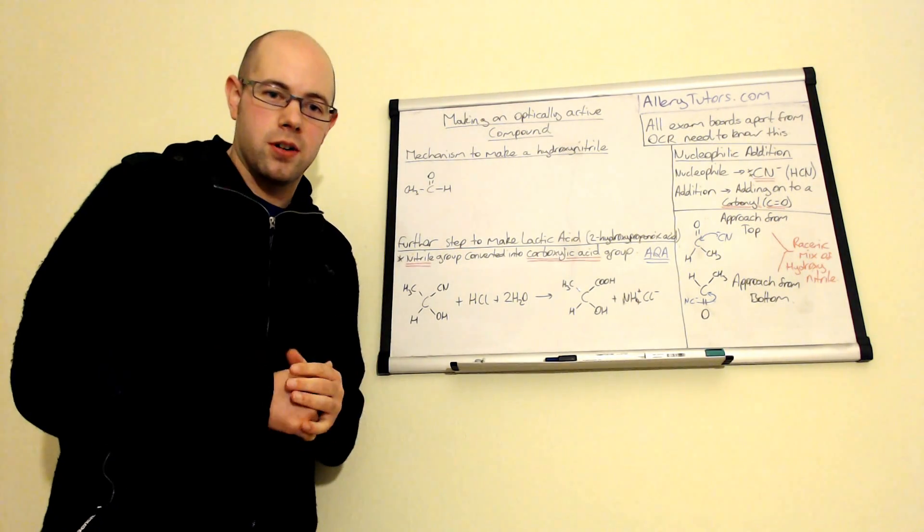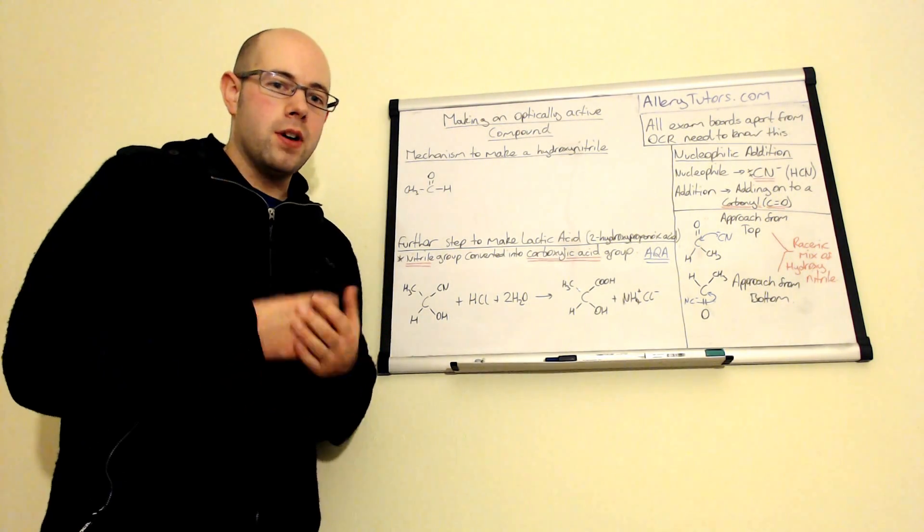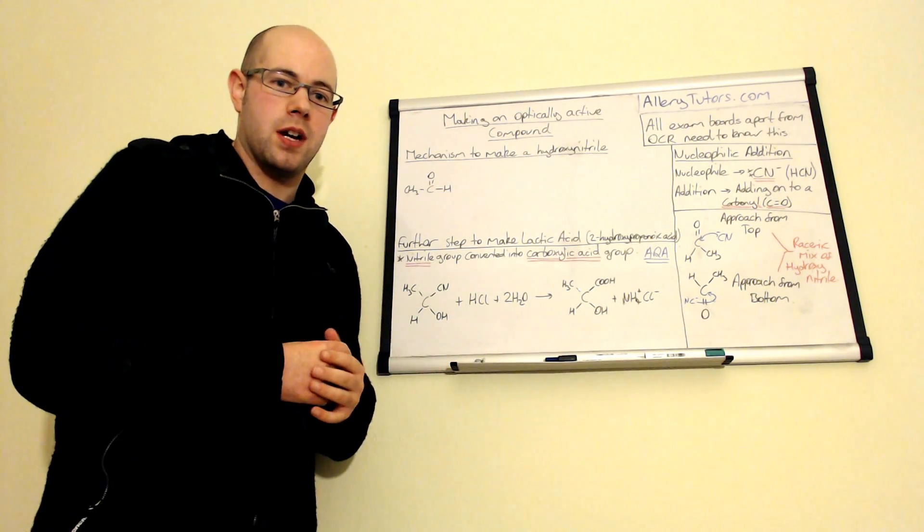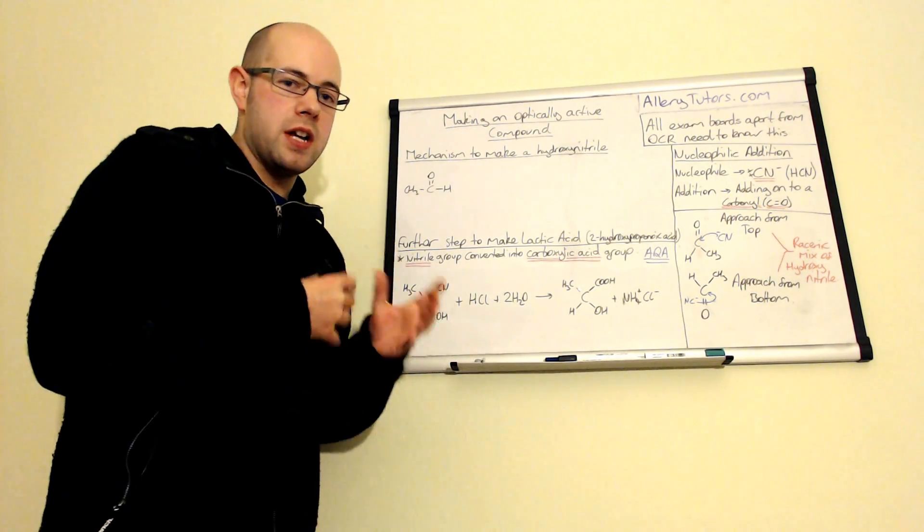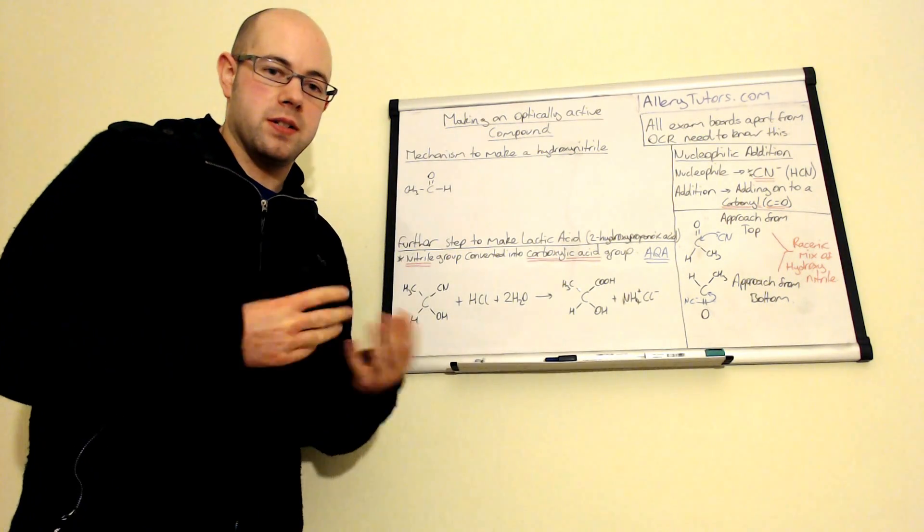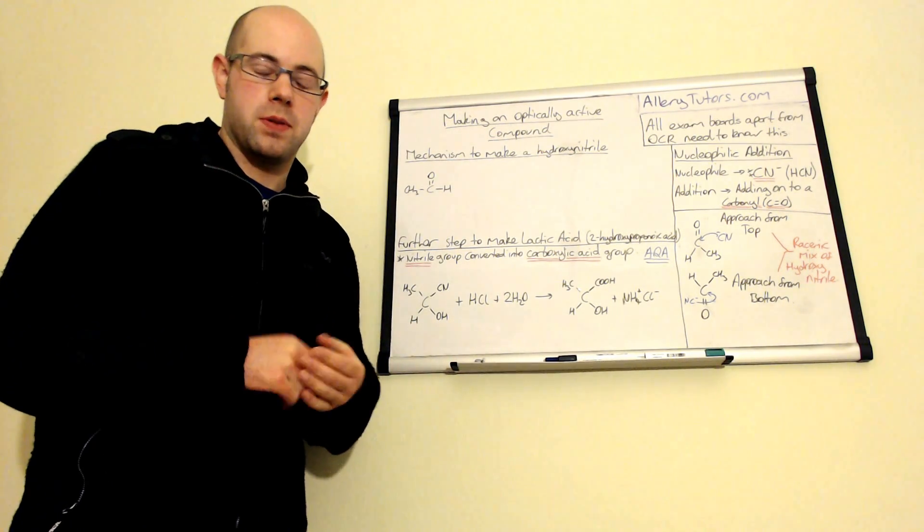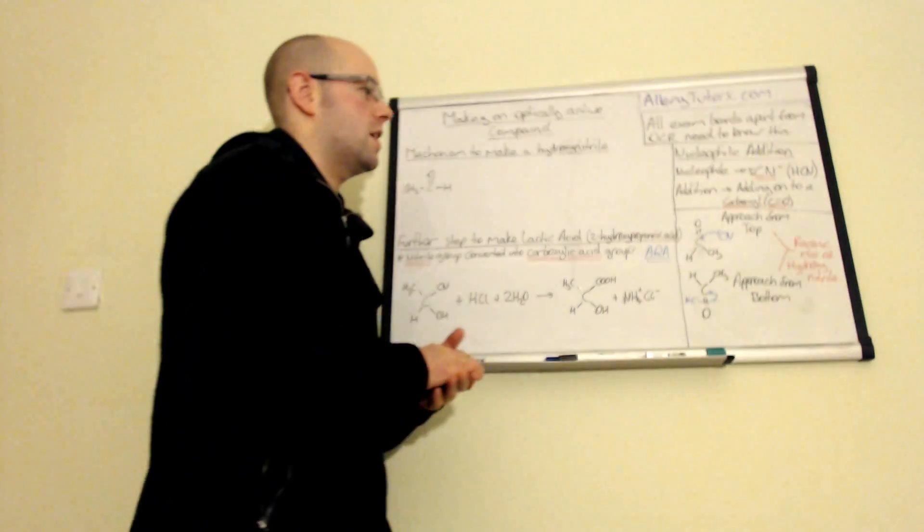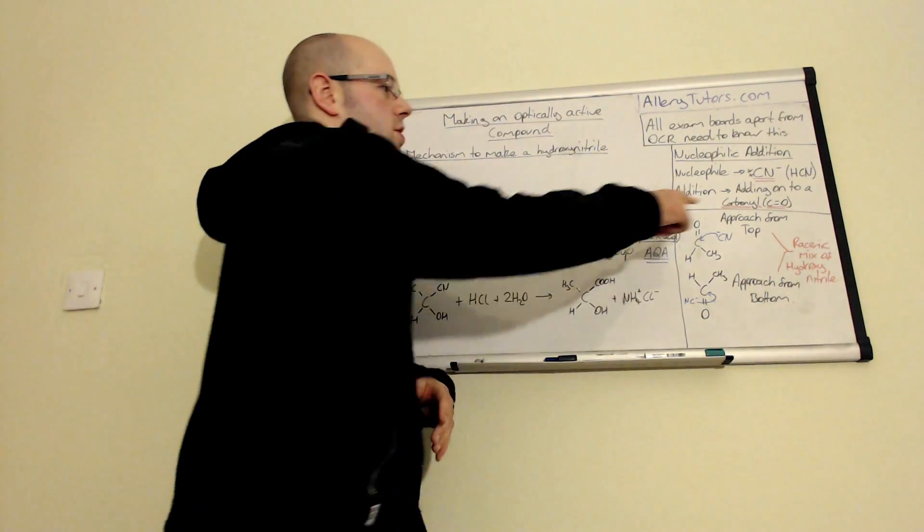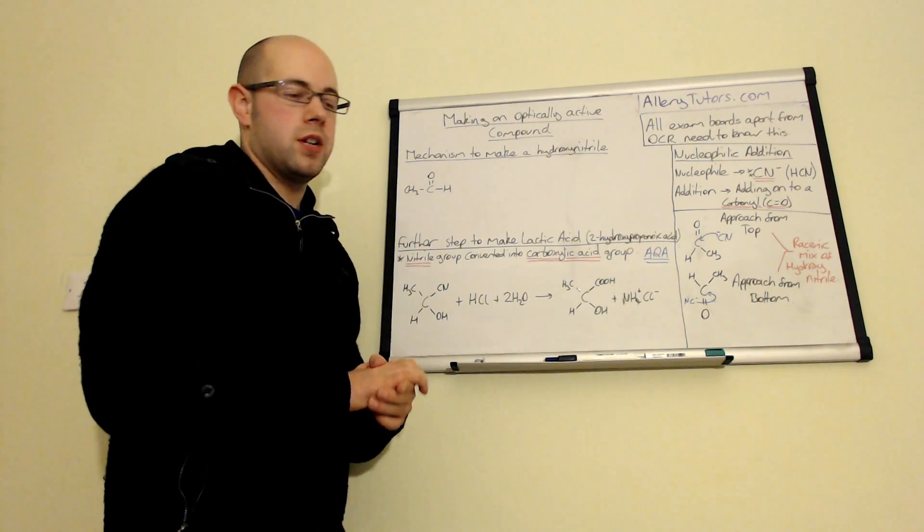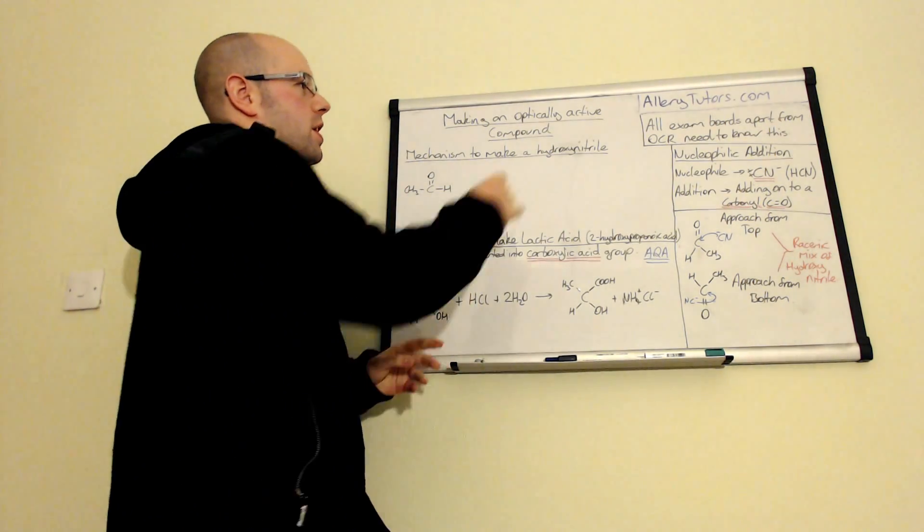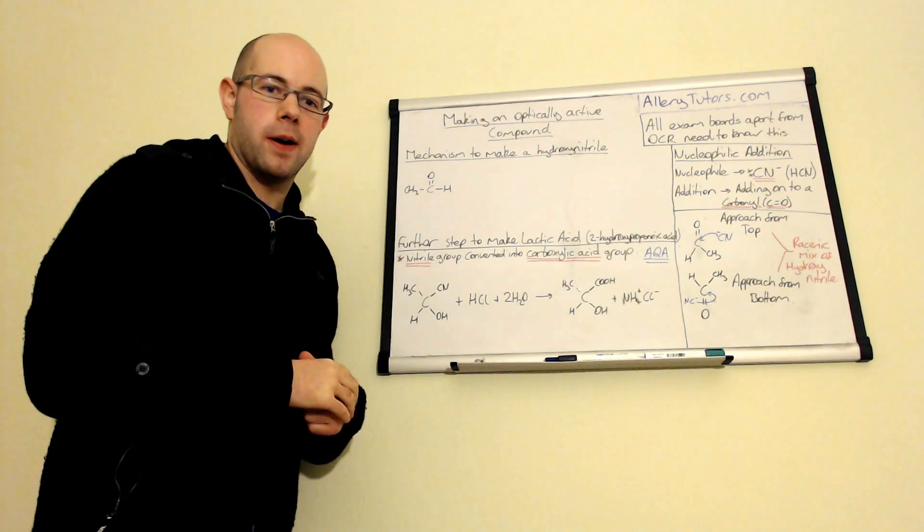So normally what you would use for practicality reasons is like sodium cyanide which is a lot easier to handle but it nonetheless still could be quite dangerous because it contains the cyanide ion so you would do all this in a fume cupboard and the addition bit is we're going to add the cyanide to our carbonyl group which is a C double bond O. And I should also notice that if you're doing OCR you won't need to know about this.